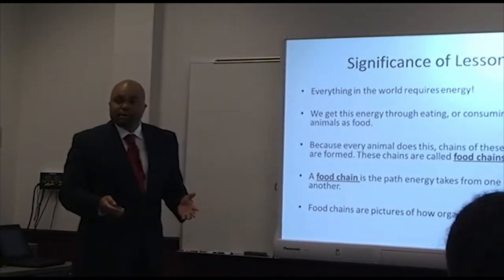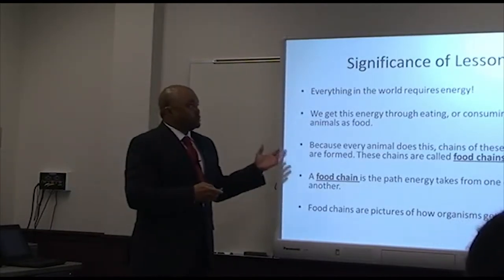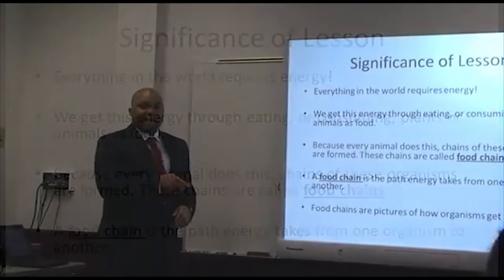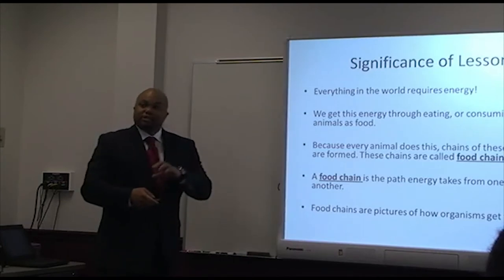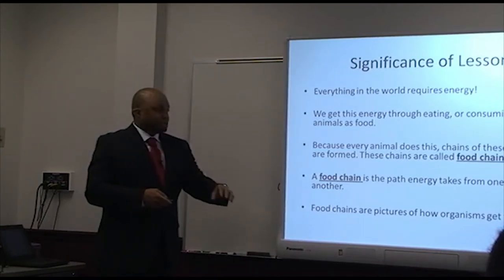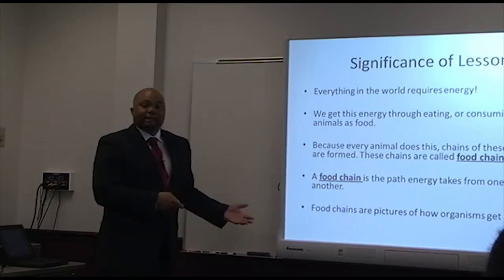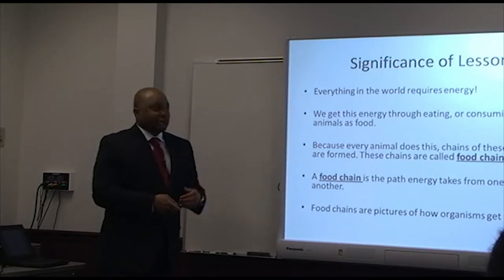So why is this important? All organisms require energy — everything in the world requires energy. As human beings, we acquire energy from eating and consuming plants and animals. Because many animals engage in this process to obtain energy, these can be organized as chains in which energy is transferred from one organism to the next. This is called a food chain — a diagram that illustrates how energy is transferred from one organism to the next.